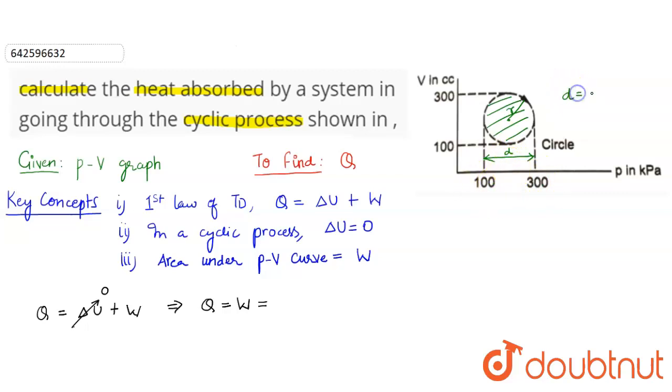All right, so the work done is actually area under the p-v curve. The p-v curve is a circle, so we need to find the area of the circle which is πr². All right, so now let us put the values of radius π. Radius is 100, so it will be 100 square. Note that unit of volume is centimeter cube and pressure is